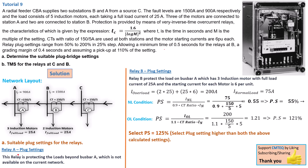For relay A's plug setting — because this relay does not have any bus bar on the upstream side that it is protecting — we don't have to calculate the plug setting for this relay. For relay B, because it is protecting the bus bar A equipment, we have to do the calculation for that relay. Now moving forward, as we've already calculated the plug setting for relay B and determined that it should be set at 125% plug setting, let's now move on to find the plug setting for relay C.